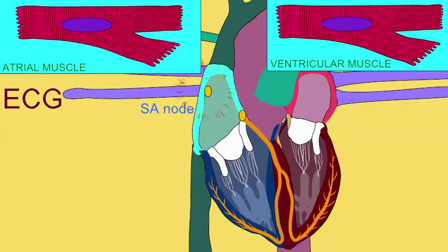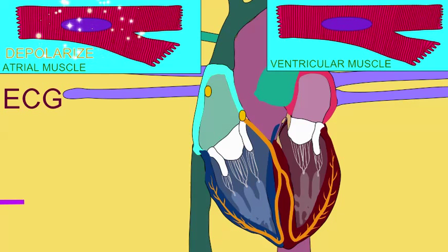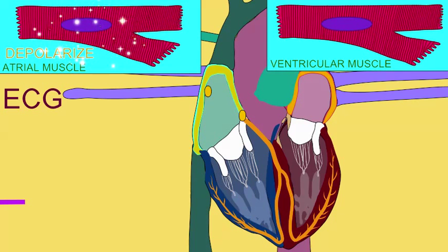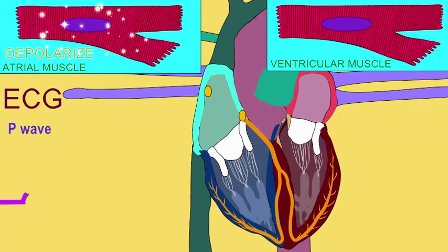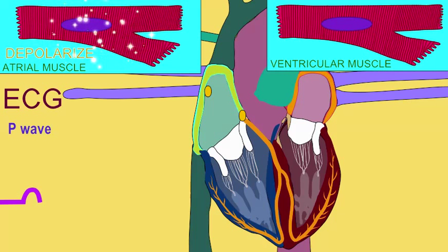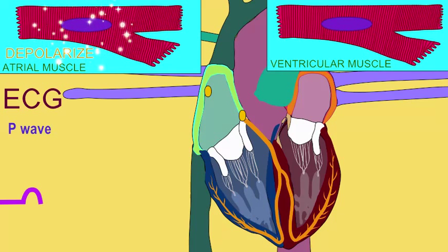From the SA node, electrical impulses travel through the cardiac muscle fibers of the atria through the interatrial pathway, and thus the atrial cardiac muscle fibers depolarize. This electrical activity is visible as the P wave, so the P wave of the ECG indicates the depolarization of the atria.